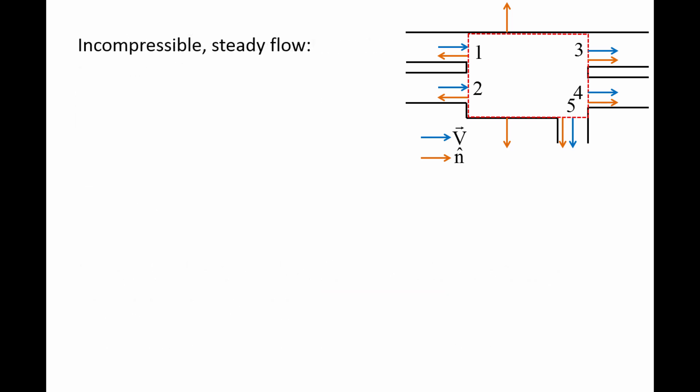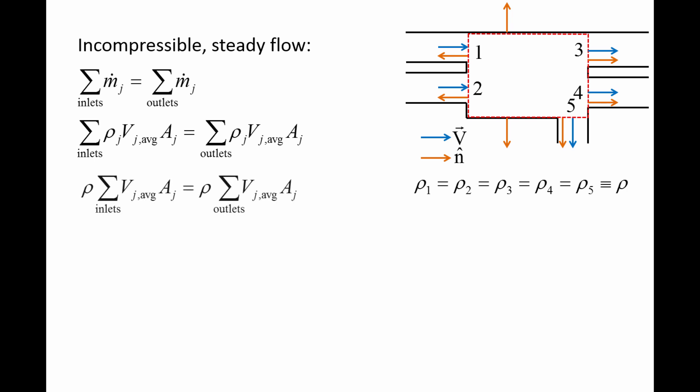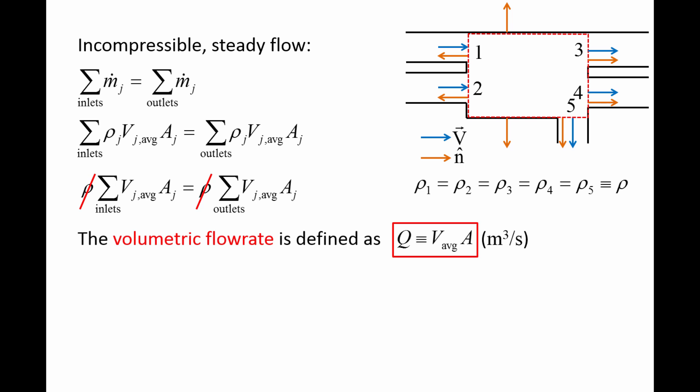If the density of the fluid at all inlets and outlets are approximately the same, we can further simplify the conservation of mass equation. We substitute rho times v-average times A for m-dot; if the fluid density is the same at all inlets and outlets, we can remove density from the summations, and the densities cancel out. We are left with the sum of v-average times A for the inlets equals the sum of v-average times A for the outlets. V-average times A has dimensions of volume per time and is called the volumetric flow rate, denoted by the symbol Q. The conservation of mass equation then becomes: the sum of volumetric flow rates at the inlets equals the sum of volumetric flow rates at the outlets.